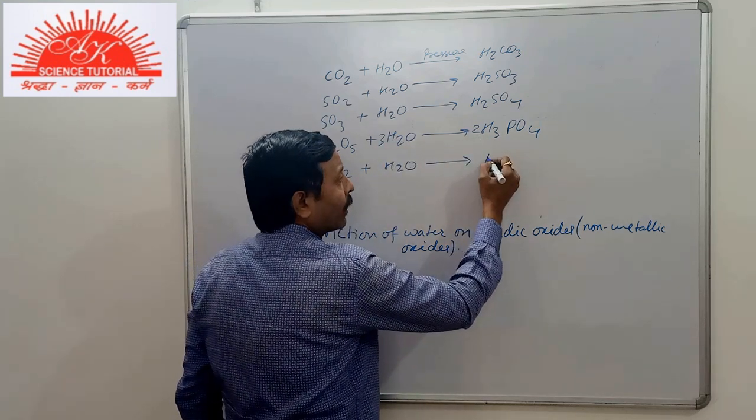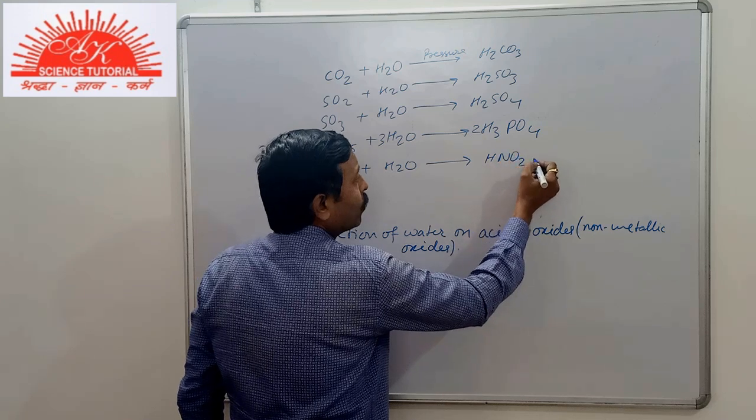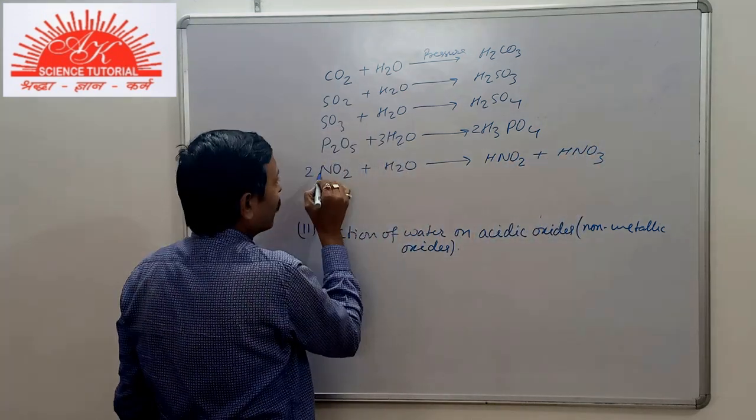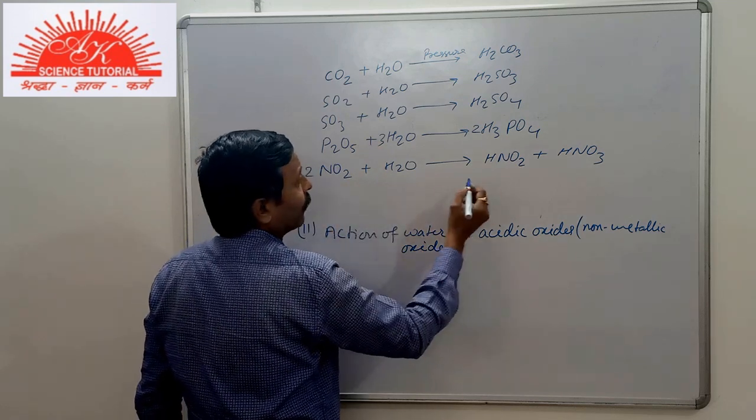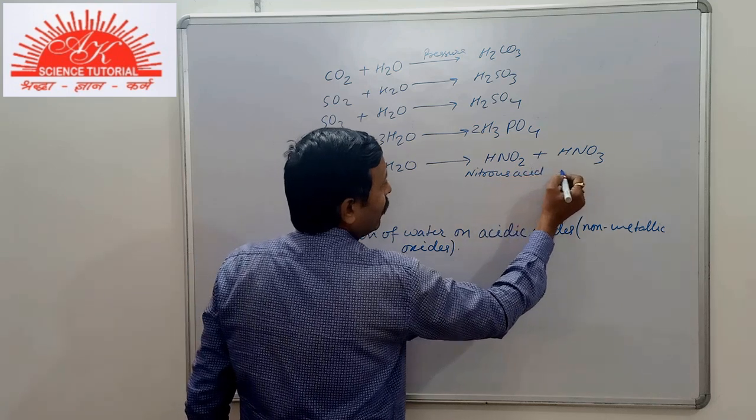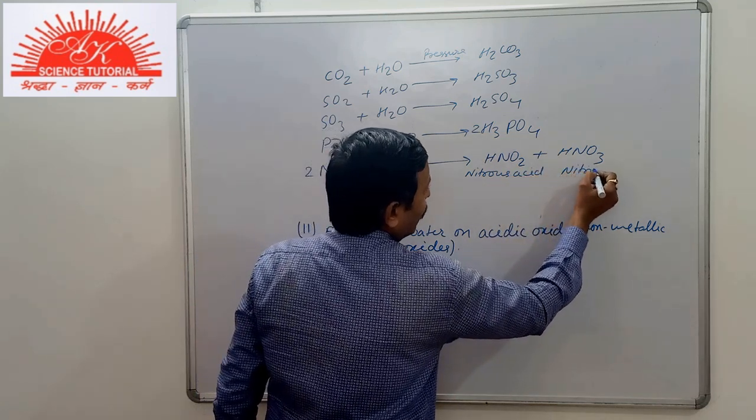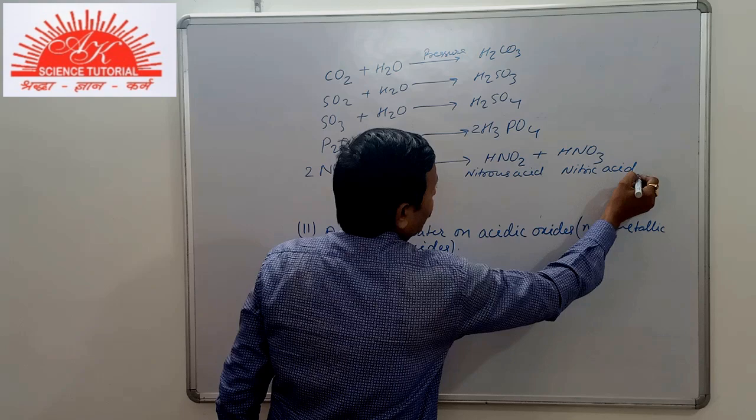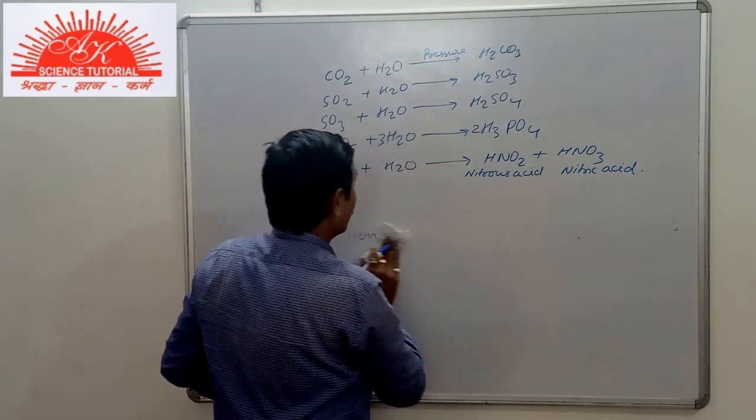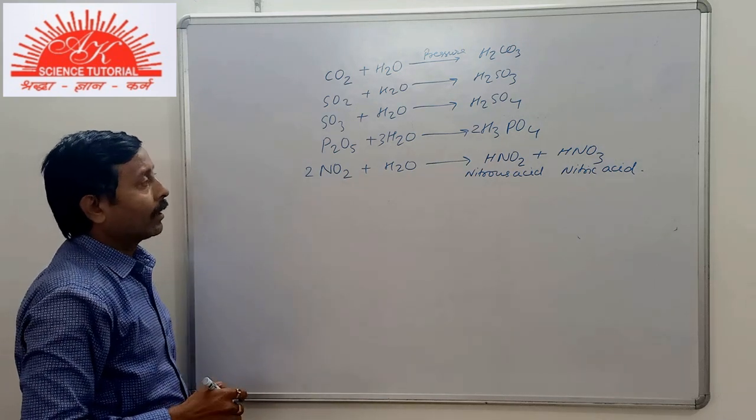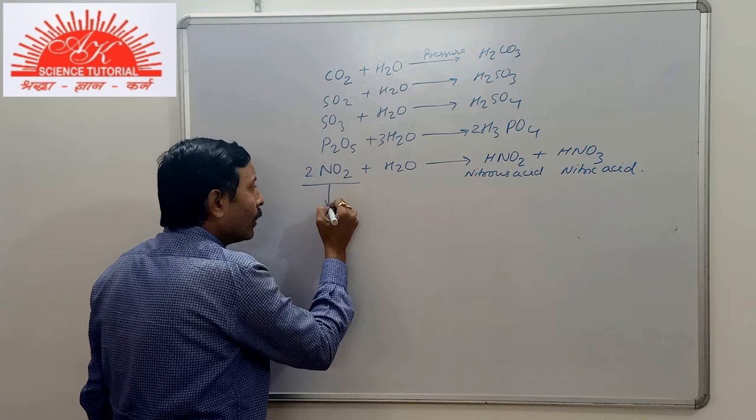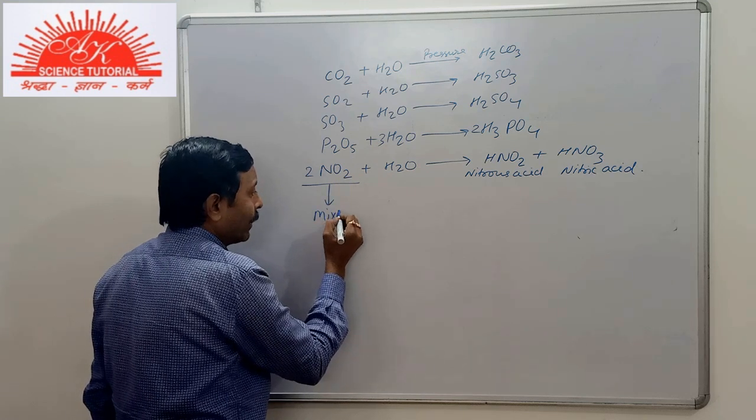When NO2 dissolves in water, it gives two types of acids. This is called nitrous acid and this is called nitric acid. So now you see that nitrogen dioxide dissolves in water to form two acids. Hence, it is called mixed acid anhydride.